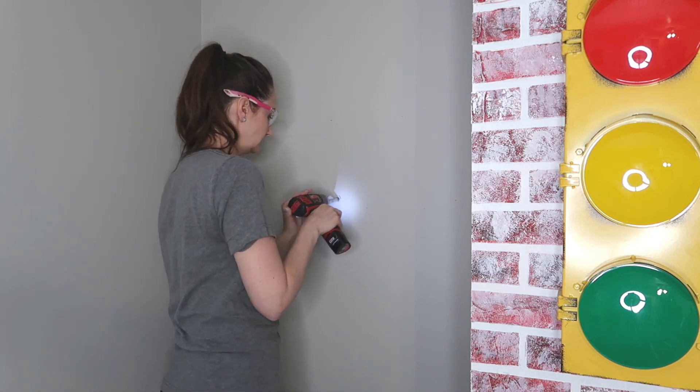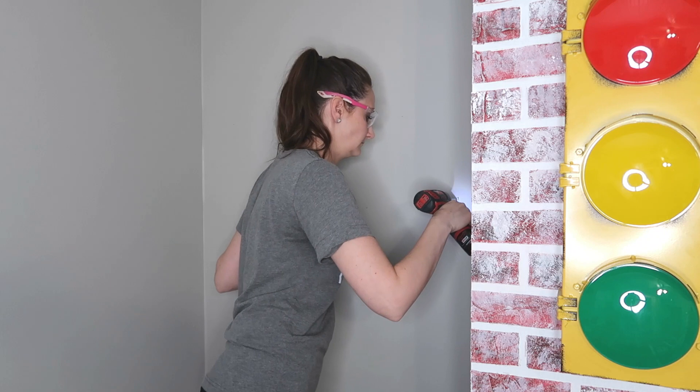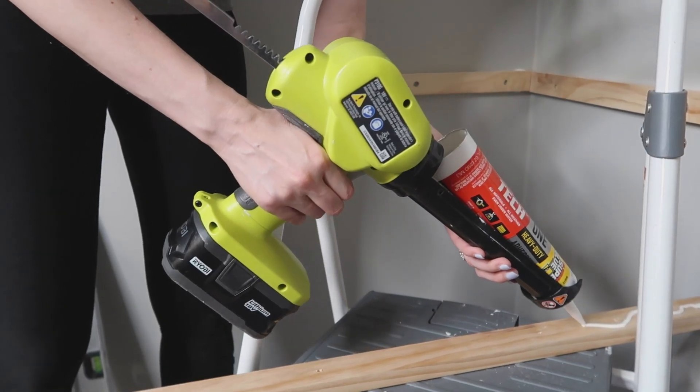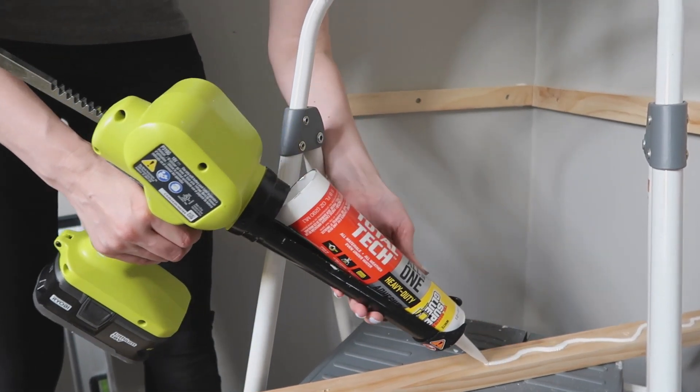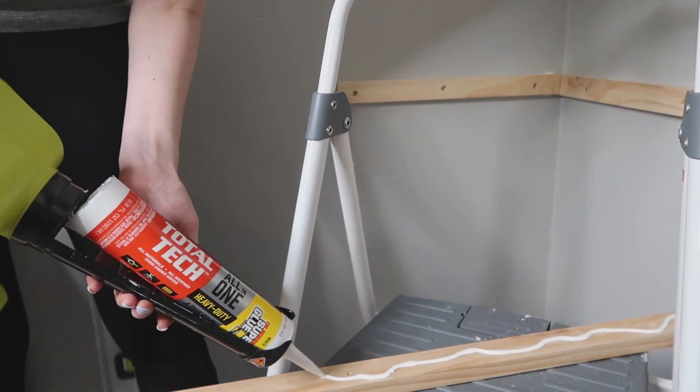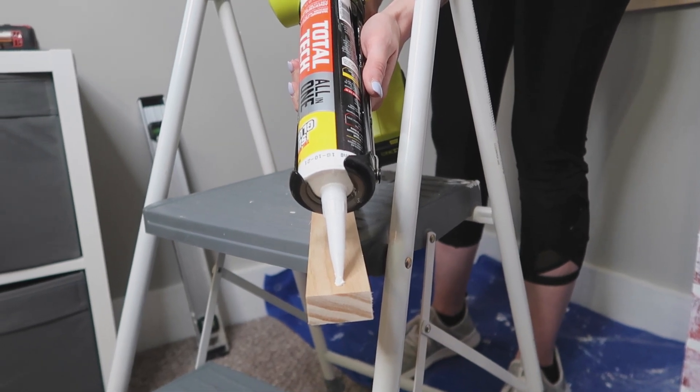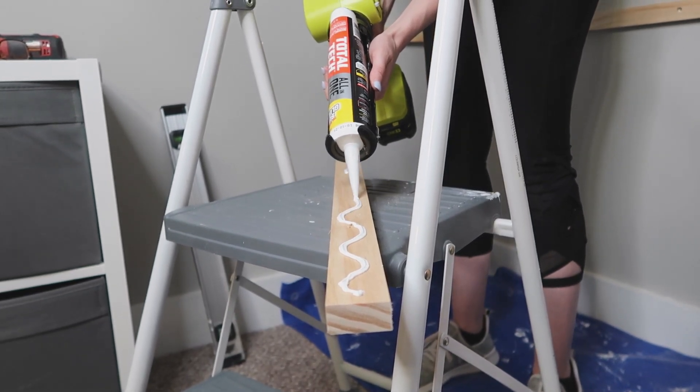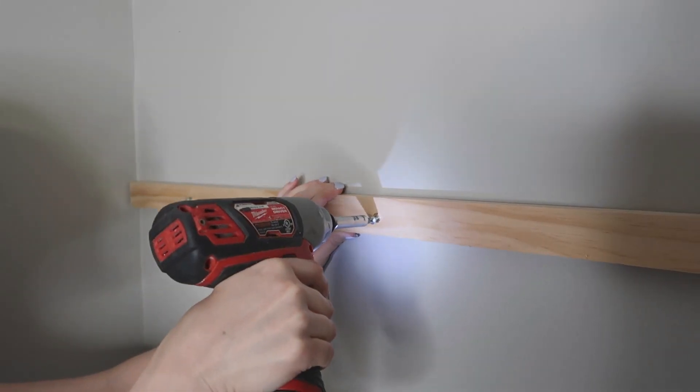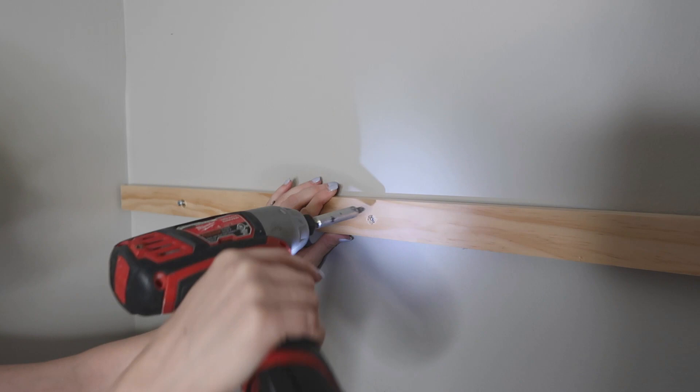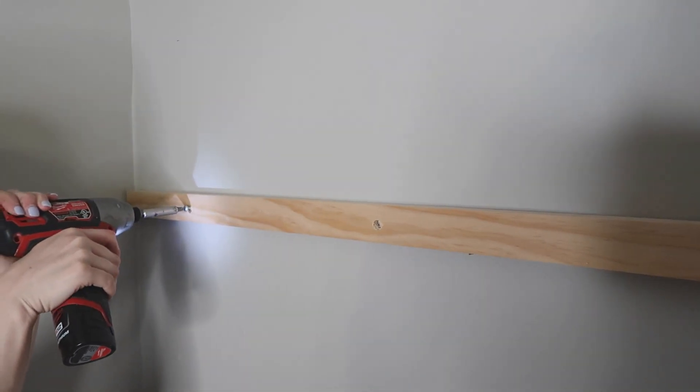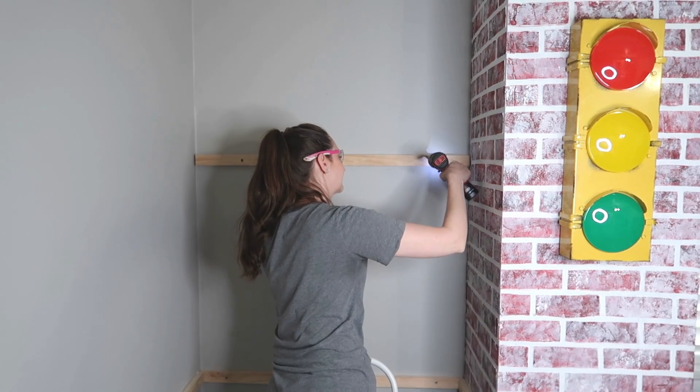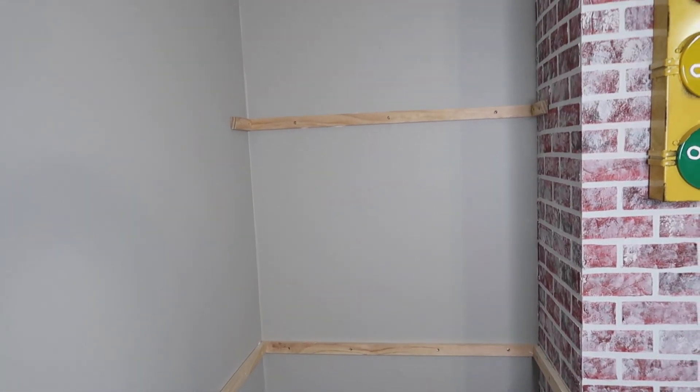Now, since the shelves are not going to be holding near as much weight as the desk, I'm only attaching three anchors into the wall for the backside of each one of these shelves. And now again, I'm adding my Total Tech onto the backside of each one of these brace pieces. I love this stuff because it is great for all materials. So it's going to bond our wood to our drywall perfectly, creating a permanent and strong bond.